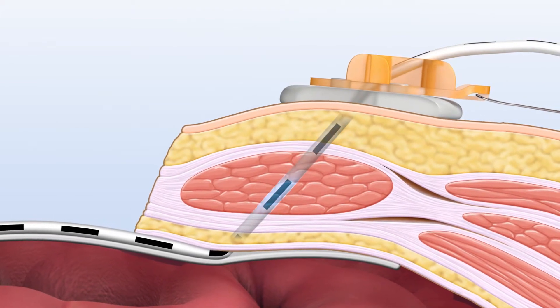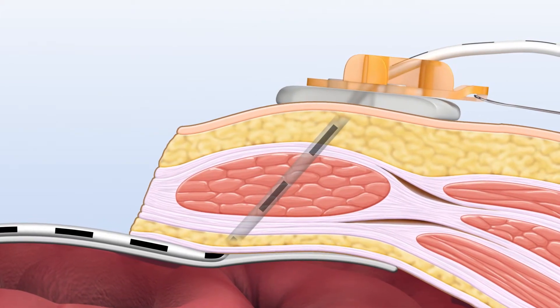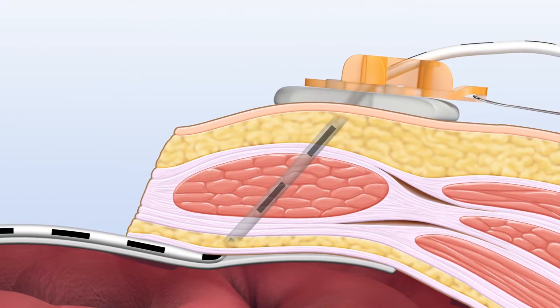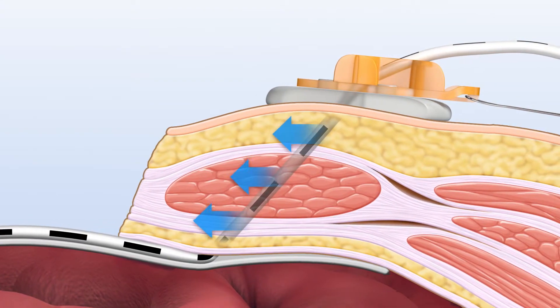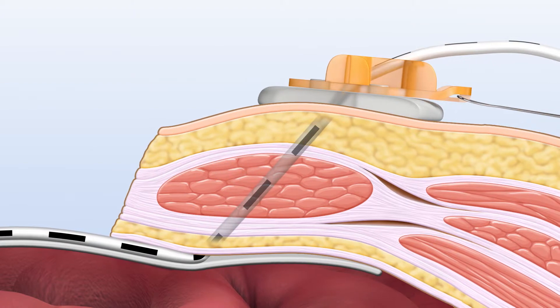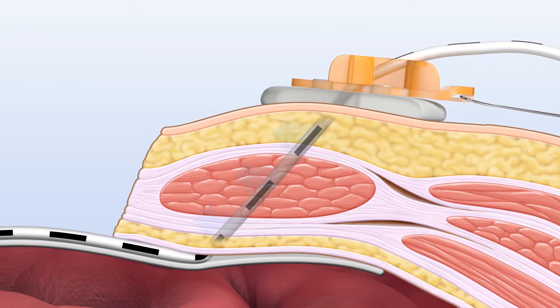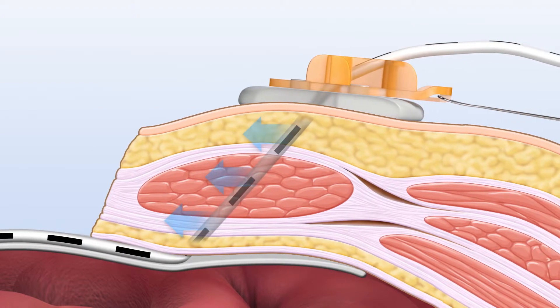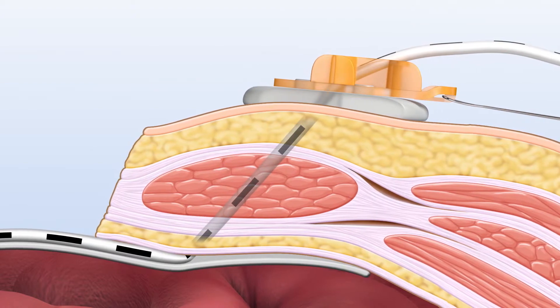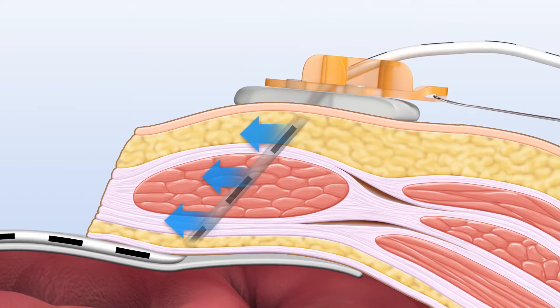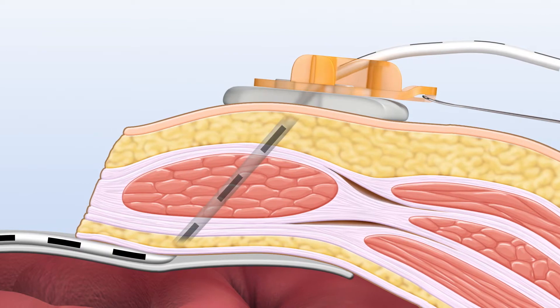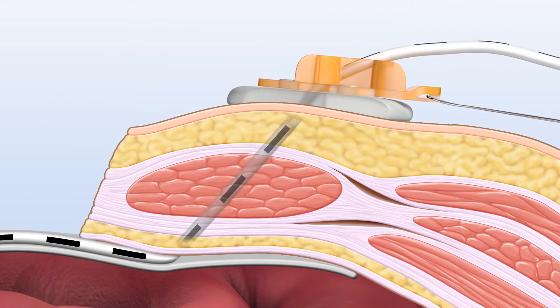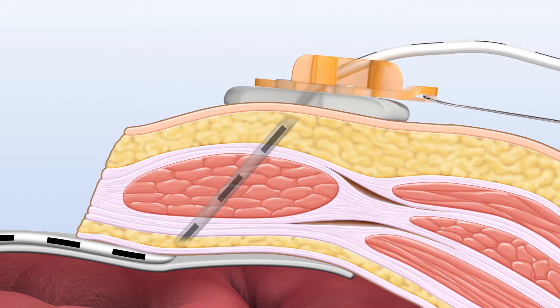The elastomer penetrates the full abdominal wall thickness, providing an even tension while leaving the native fascial margin free for primary suture closure once the wound has been approximated.